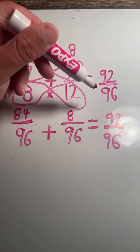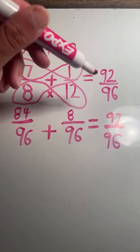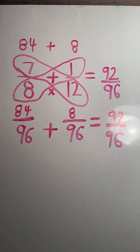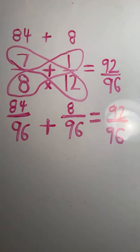On another live stream, I'm going to reduce 92 over 96 to lowest terms. It just won't be this live stream. I don't want to throw too many steps at everybody all at once.